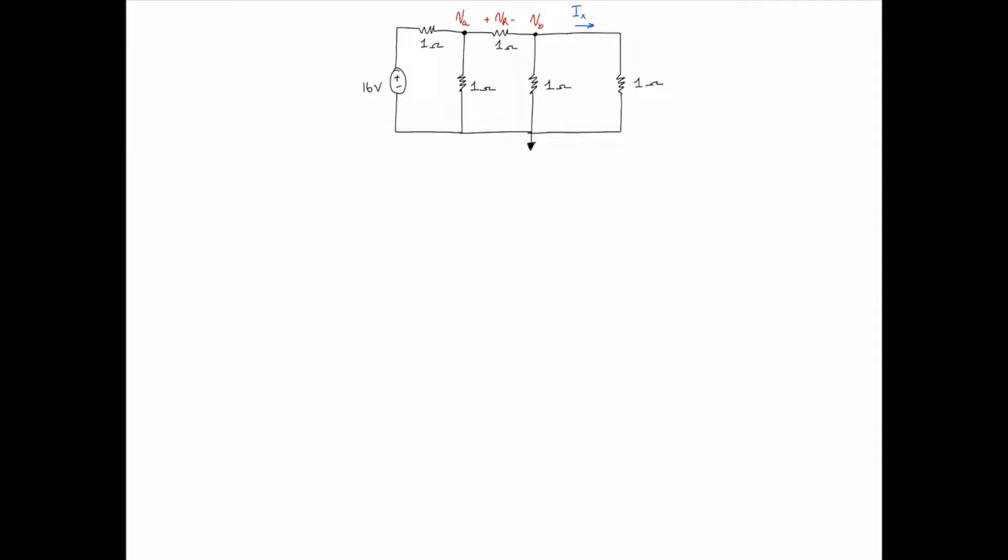Welcome back everyone, this is Inc and in today's problem we're going to use nodal analysis to solve for the voltage at VA, the voltage at VB, the voltage across the 1 ohm resistor Vr, and the current in the right branch Ix. In a previous problem we had the case of VA equaling VB because there were no components causing a voltage drop between those two terminals.